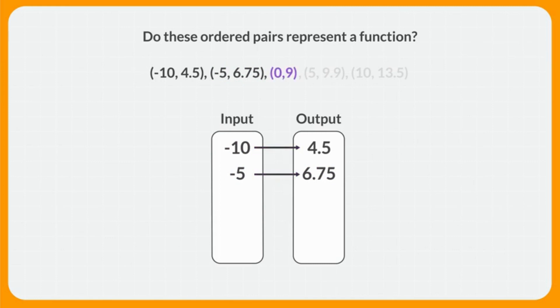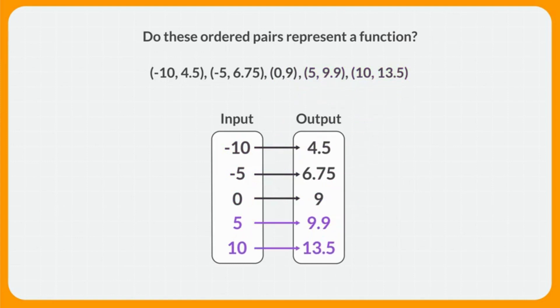We'll add this point next — an input of 0 and an output of 9. Now does this map still show a function? There are now 3 inputs, each with just one output, so the map still shows a function. Now we'll add these last two points to our map. Now that we've shown all 5 points, our map is complete. All 5 points each have just one output, so this map still shows a function.